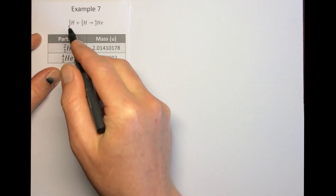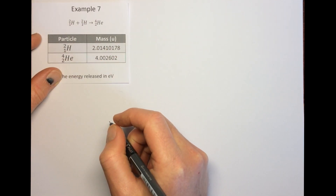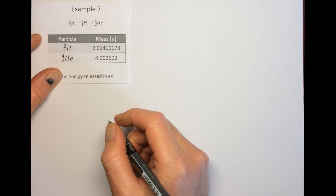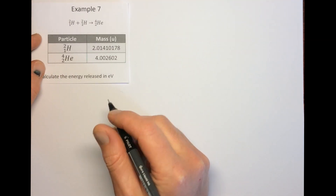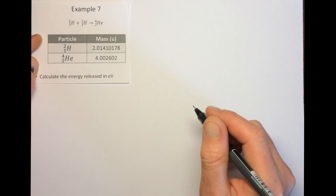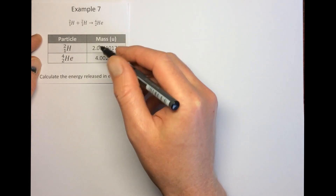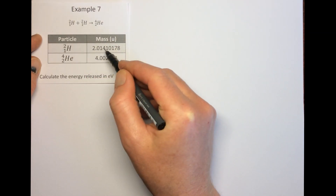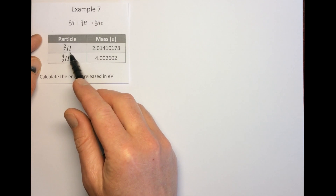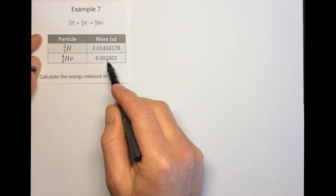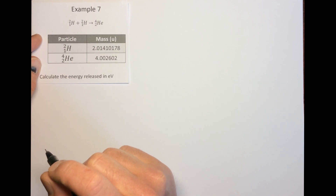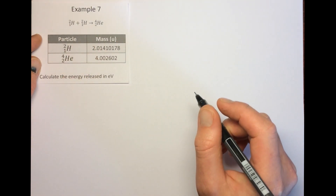We've got two deuterium nuclei joining together to make a helium nucleus. Deuterium is just an isotope of hydrogen — hydrogen-1 has one proton in its nucleus, while deuterium, known as hydrogen-2, has one proton and one neutron. We're asked to calculate the energy released in electron volts in this nuclear fusion reaction. The issue is that the given masses are atomic masses — the mass of a deuterium atom and the mass of a helium atom — but we're dealing with nuclei here.